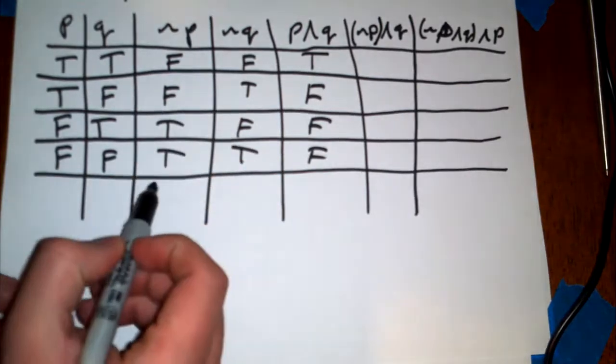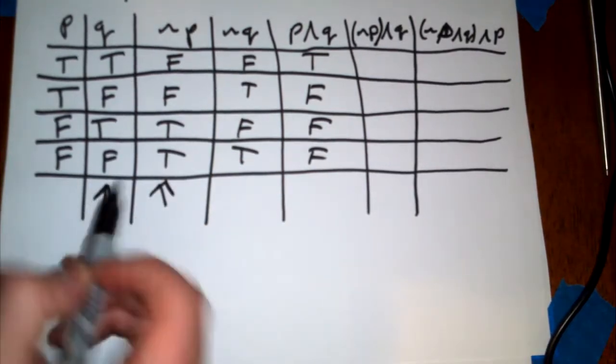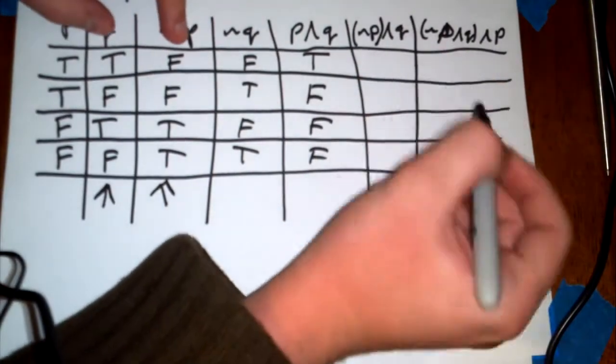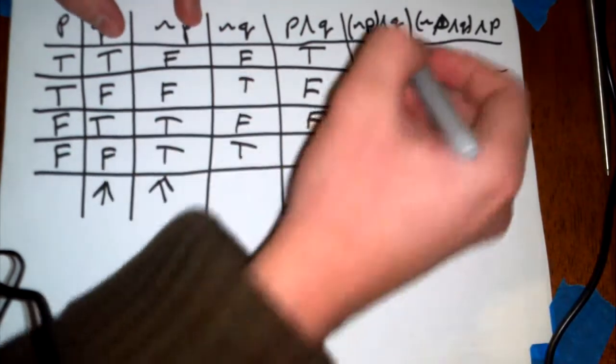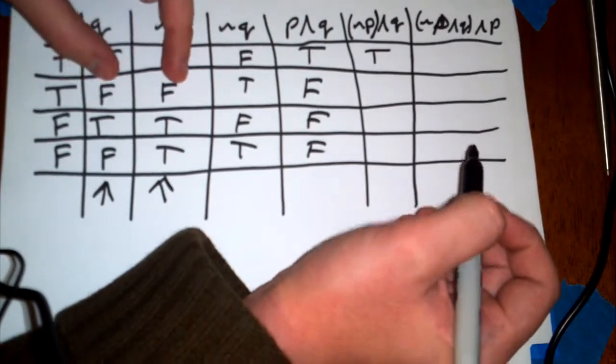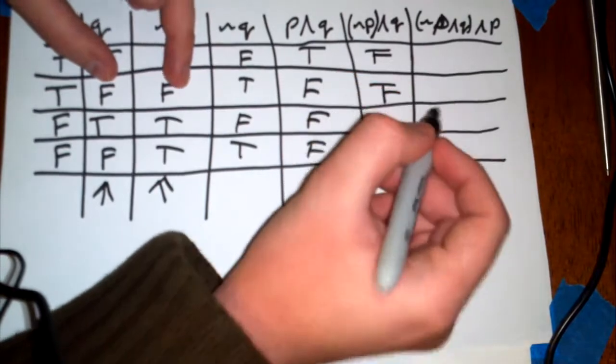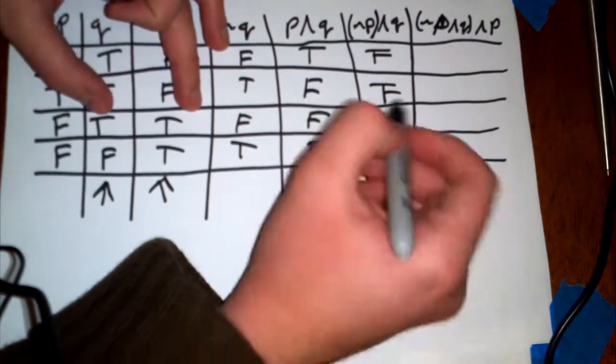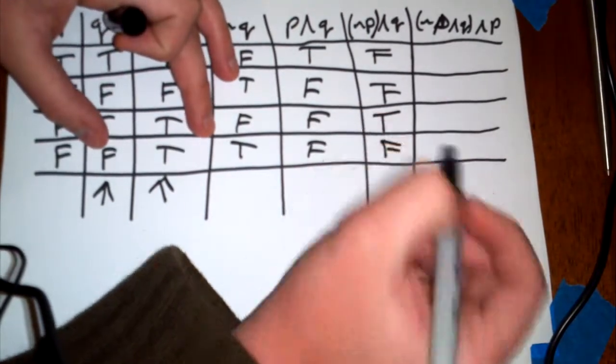This NOT P has to be done first. So when we're looking at this, we're going to look at both the NOT P column and the Q column to see if this is true. So if we're looking at this one, this one is false. These two statements, this NOT P and this Q statement, one of them is false, so this is false. And the second one down, these are both false, so this is false. Sorry, I wrote true. These are both false. This one down here, they're both true, so this is true. And one of these is false, so this is also false.